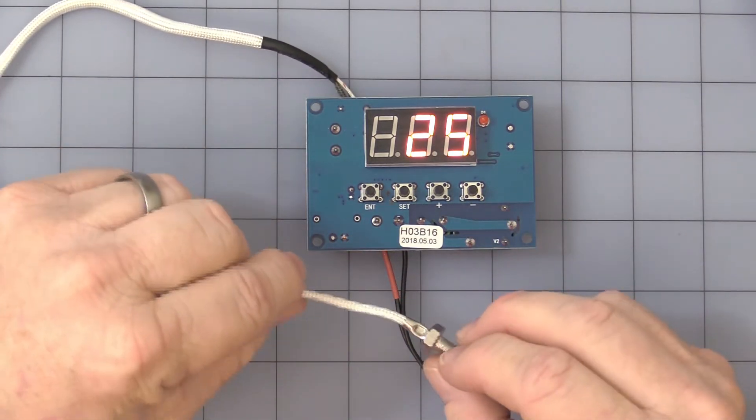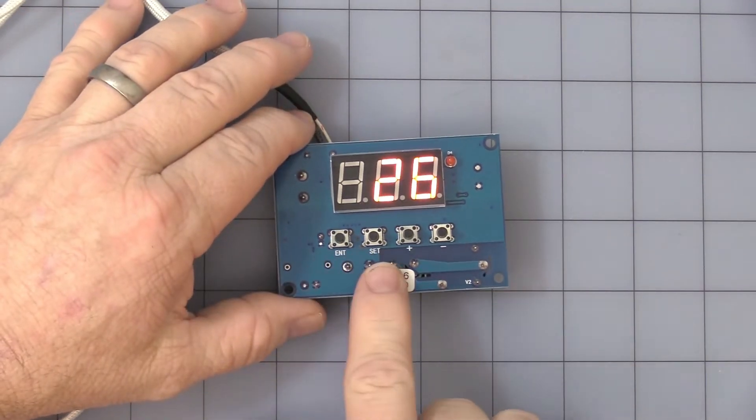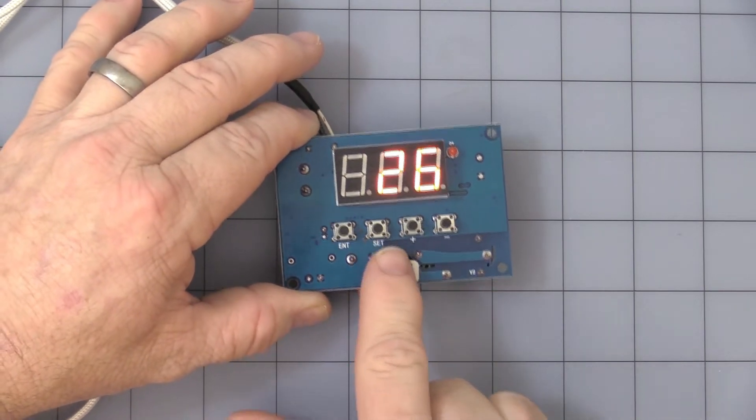Okay, let's get into the programming of the unit itself now. You have four buttons. You have enter, set, plus and minus. You just simply hit the set button once.